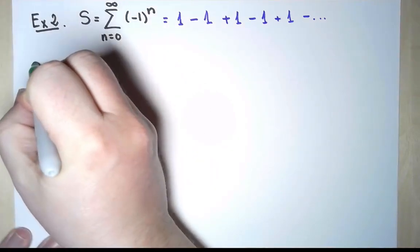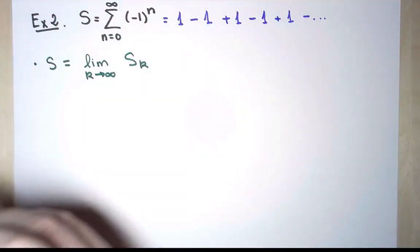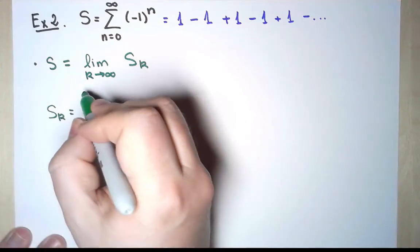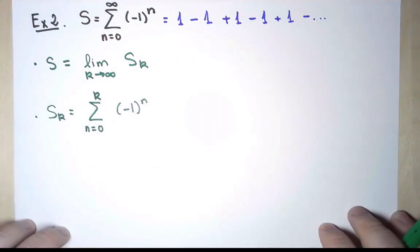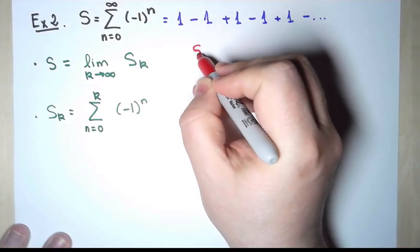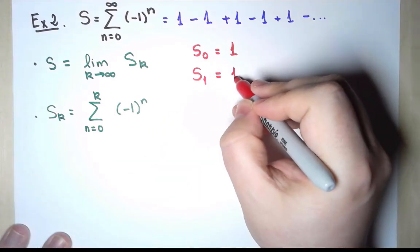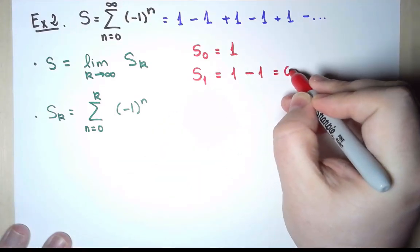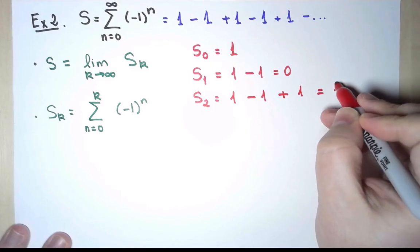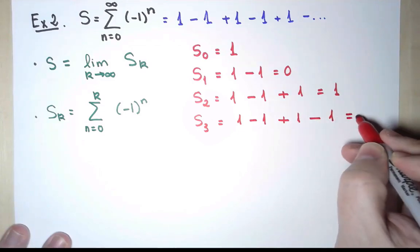So once again, the definition of series, or infinite sums, says that s should be the limit as k approaches infinity of the kth partial sum, where the kth partial sum is defined to be the very same sum but when the index reaches the value k. Let's compute the first few partial sums. I will start in this case with 0, not with 1. So s0 is just the 0th term, which is 1. s1 is the 0th term plus the first term, which is minus 1, so it's 0. s2 is 1 again. s3 is 0.